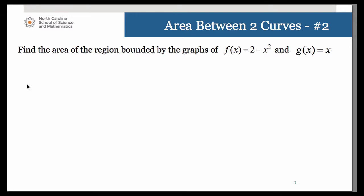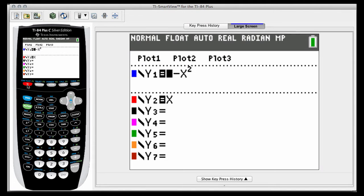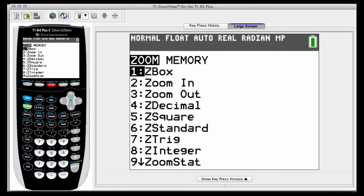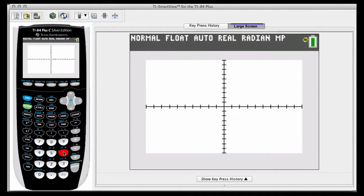So let's take a look at them on our graphing calculator. Just go ahead and do zoom 6 to graph them. And this is really your classic area between two curves problem.